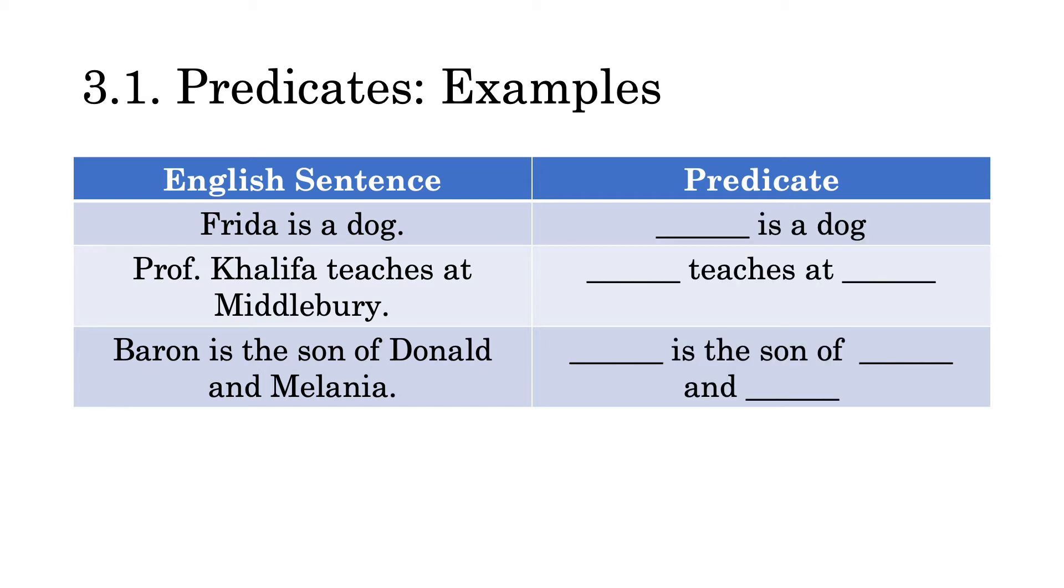So in the first sentence, Frida is a dog. Quite clearly, Frida is an individual constant. We pull that out and the predicate is therefore, is a dog. We turn to the second sentence, Professor Khalifa teaches at Middlebury. And we know that both Professor Khalifa and Middlebury are individual constants. So we yank those out and what's left over is the predicate teaches at. Finally, let's look at a new example for the discussion. Barron is the son of Donald and Melania. So Barron, Donald and Melania are all names of individual objects. We pull those out and we end up with is the son of blank and blank.